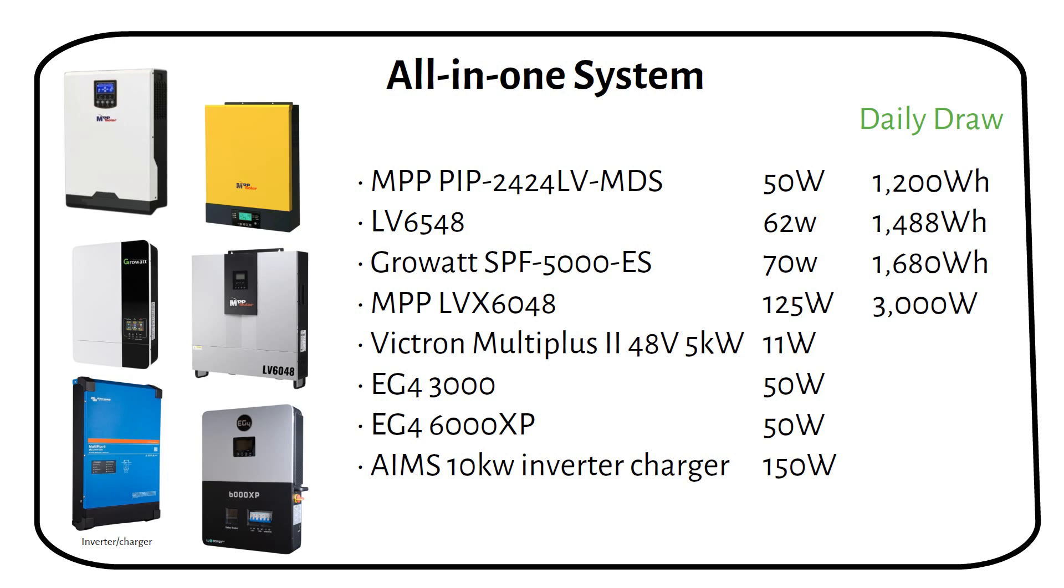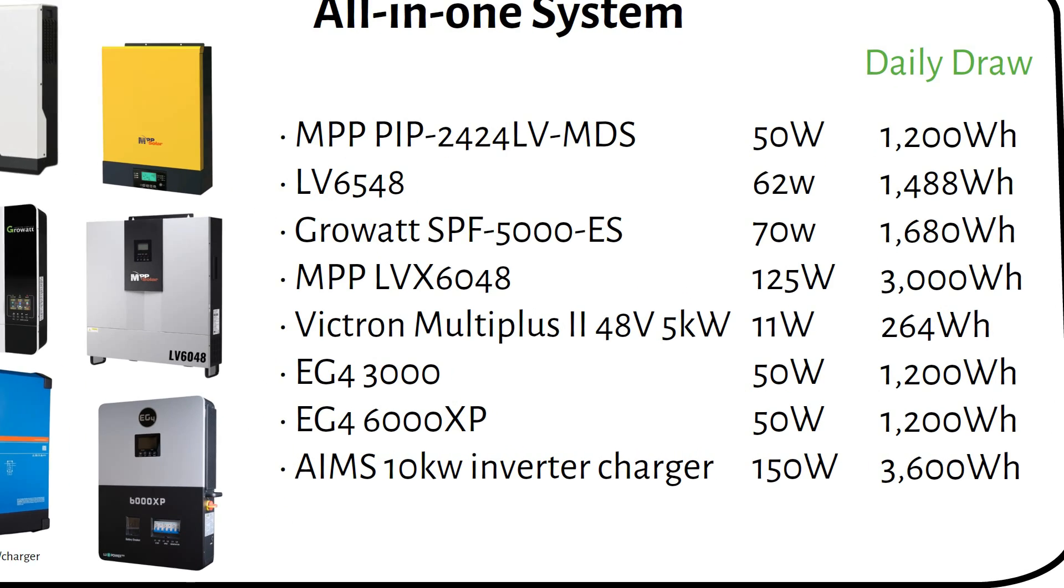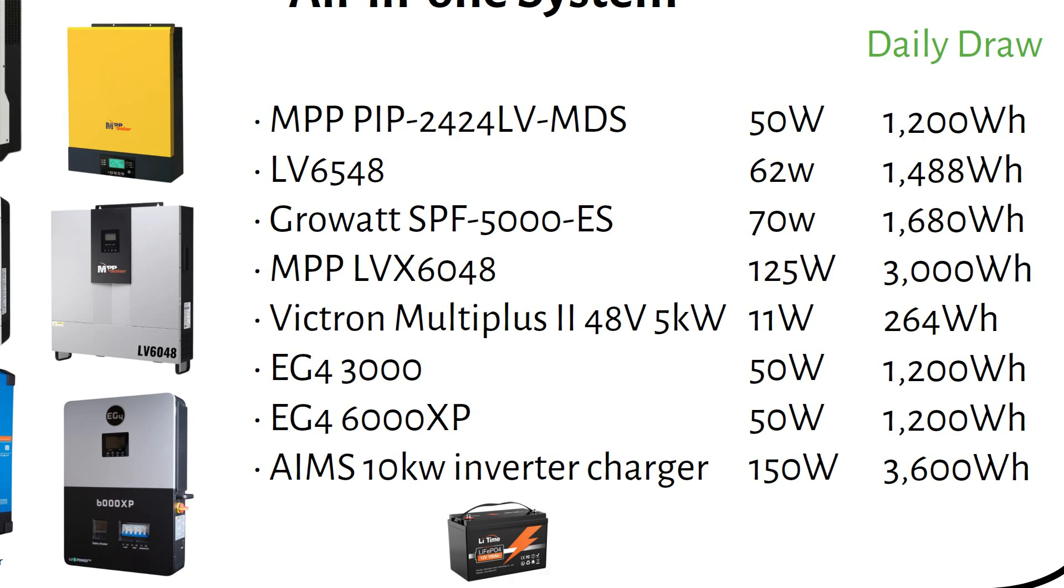This is the daily idle power consumption in watt-hours. As you can see, some of these inverters can consume the entire capacity of a 12 volt 100 amp-hour battery, which is 1200 watt-hours in one day, even when not actively in use.